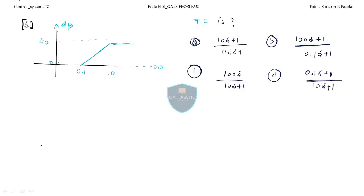Let us come to the next question — this type we have done earlier. The Bode plot is given and we have to find the transfer function. The first slope is 20 dB per decade. On the y-axis we go from 0 to 40 dB, and on the x-axis we cross 2 decades (1 to 10), confirming 20 dB per decade.